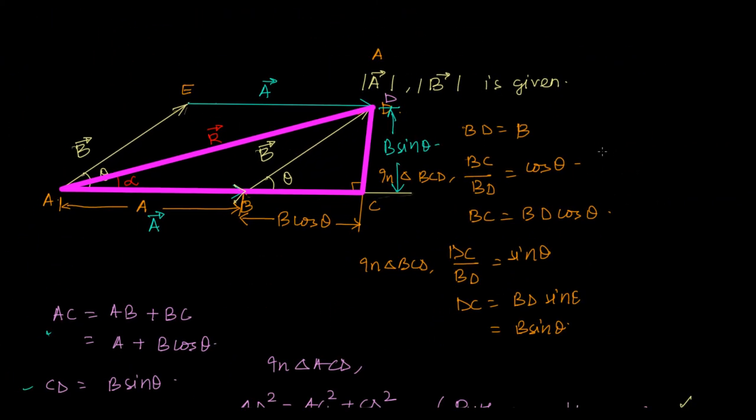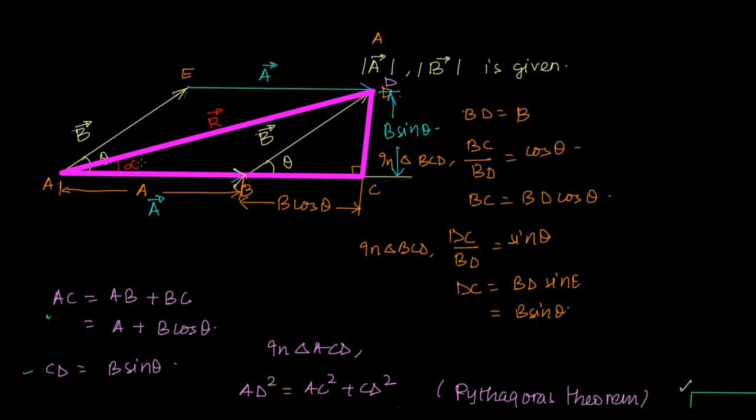So what we are trying to say is this angle is equal to theta upon 2. So this becomes the bisector of these two. And do we understand that if this is a parallelogram, this diagonal is actually the resultant. Now if these two sides are equal, then the parallelogram that you get is actually a rhombus. Because then all the four sides will be equal. And in a rhombus, the diagonal bisects the angle between the sides.